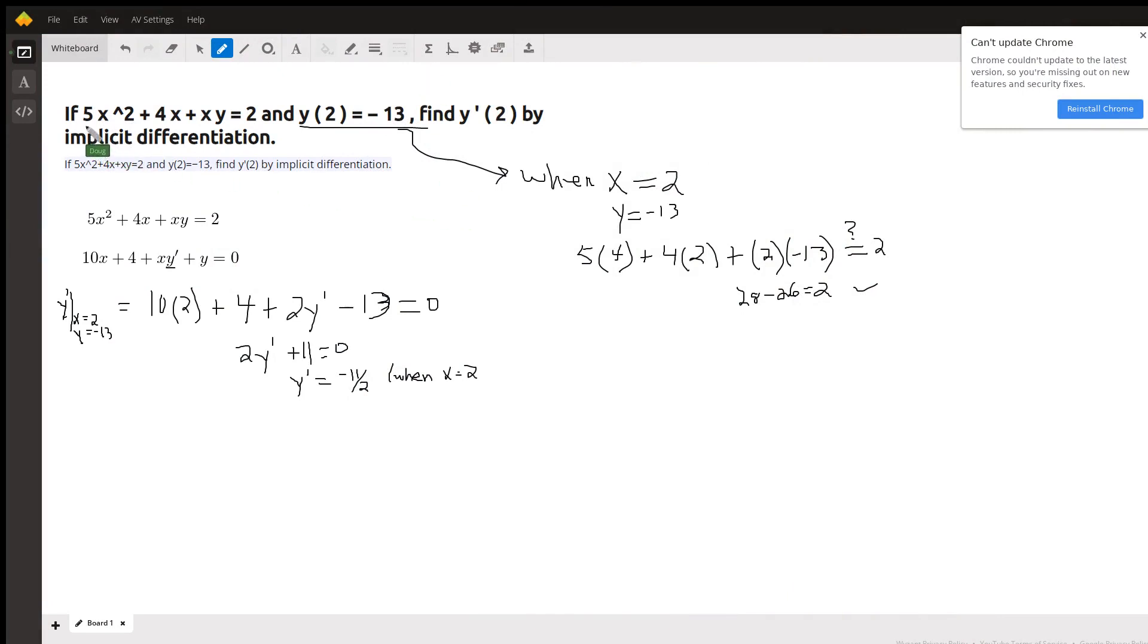Okay, here we go. We're given this relation between x and y which is implicitly defined, y is a function of x, and we're supposed to evaluate y prime of 2 when we're also given that y of 2 equals negative 13. This says the same thing as saying when x is 2, y is negative 13. Just to convince yourself, put 2 in for x, negative 13 in for y, and see if you do get an answer of 2, and you do.